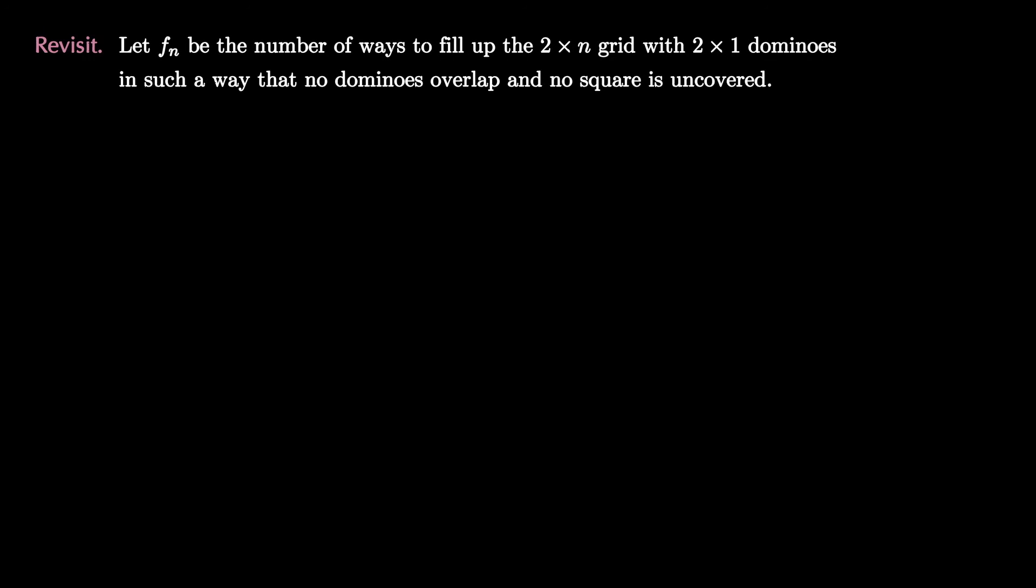Let's finish this video by following up on our domino tilings that we started with. Maybe now we can figure out how many there are, using the sequence approach. So let's let Fₙ be the number of ways to fill up the 2 by n grid with 2 by 1 dominoes in such a way that no dominoes overlap and no square is uncovered. As we've already seen, F₁ equals 1. There's only one tiling.